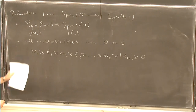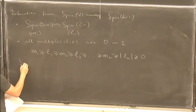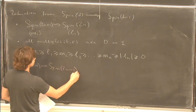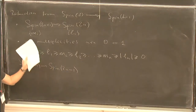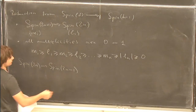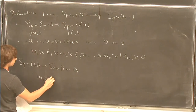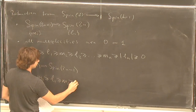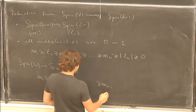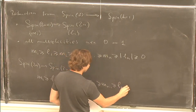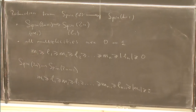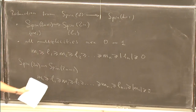For going from Spin(2N) to Spin(2N-1), it's only a little bit different. In the first case we had N M_i's and N L_i's; in this case we will have N-1 L_i's, and the inequalities are slightly different at the end. It's essentially the same thing, just a little bit different at the end.